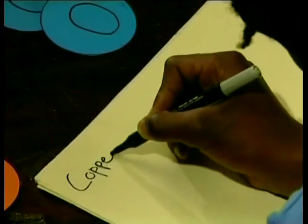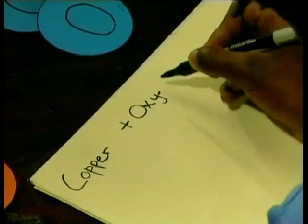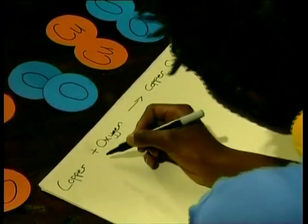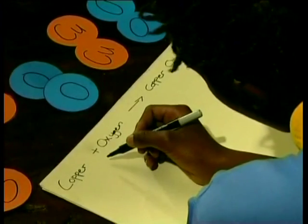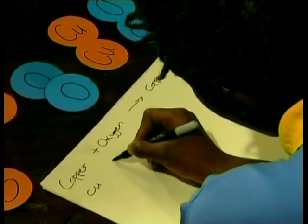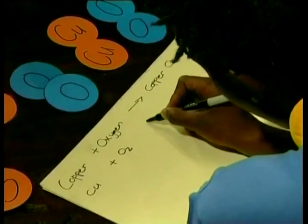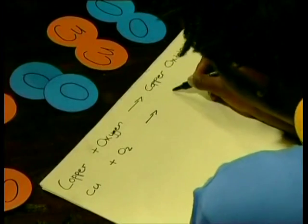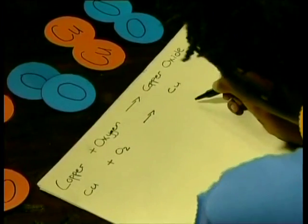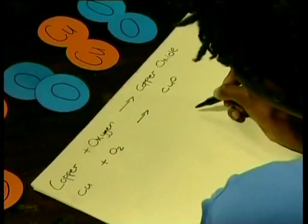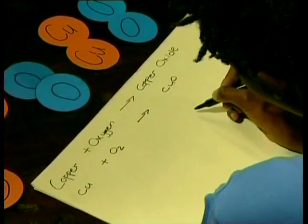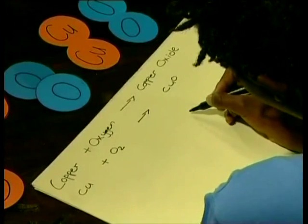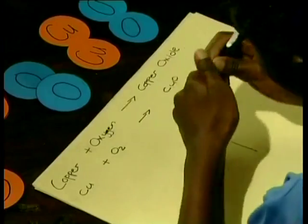Copper plus oxygen react to form copper oxide. Step two is to change the word equation to a chemical equation. The symbol for copper is Cu. Oxygen O is always found as a diatomic molecule, and one copper atom reacts with one oxygen atom to form copper oxide.